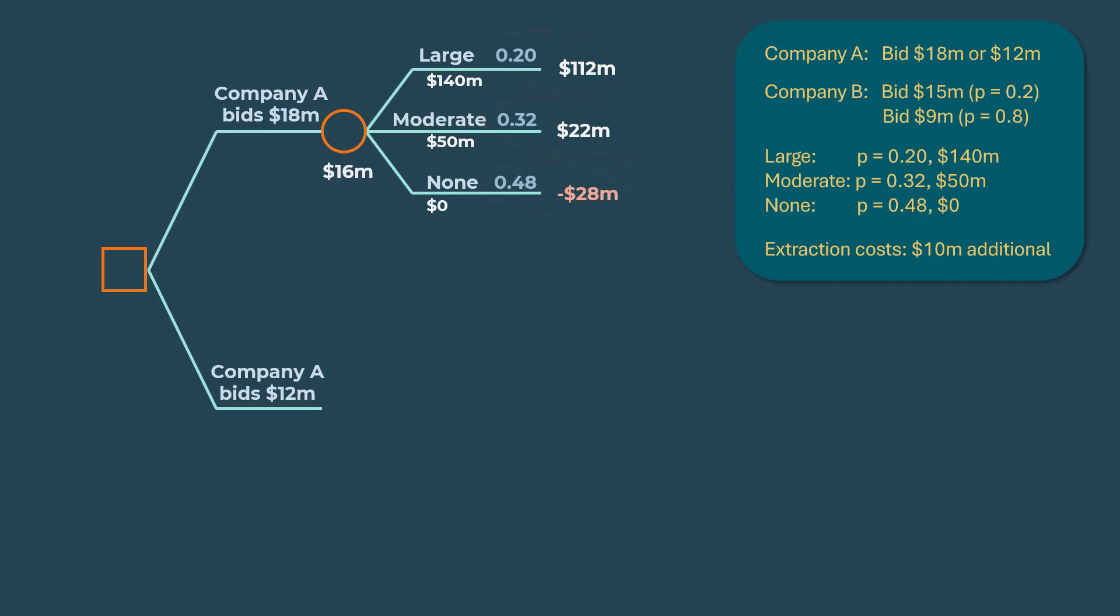Note that we could have obtained the same result by calculating the expected values of the net returns, which will give $44 million. And on subtracting the $28 million, we will have $16 million.